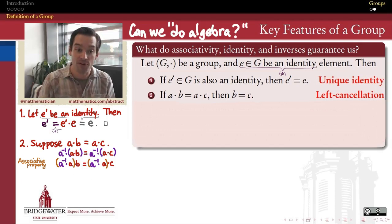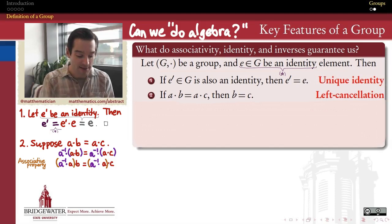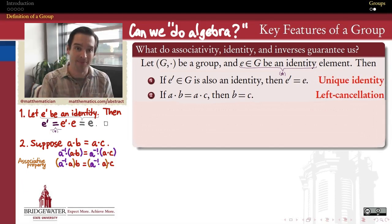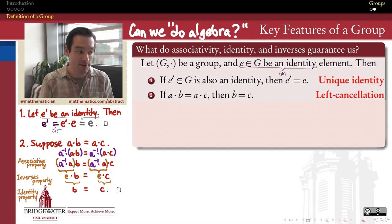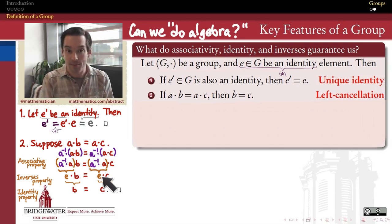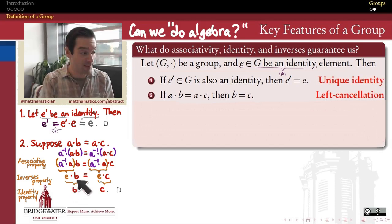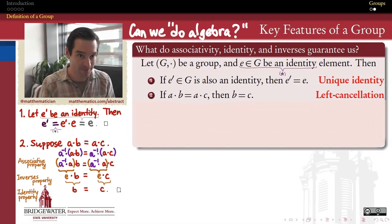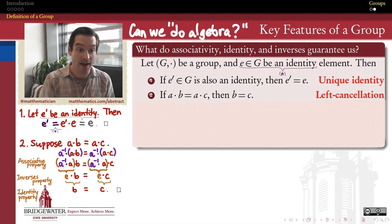The associative property says I can move the parentheses wherever I need them without changing the value. Since I've moved the parentheses to be around A inverse and A, we ask: what do we get when we do A inverse operation A? By the inverses property, that's equal to the identity element E. What we're left with is E times B and E times C, and by the identity property, EB equals B and EC equals C. Therefore B must equal C, proving the left cancellation property.